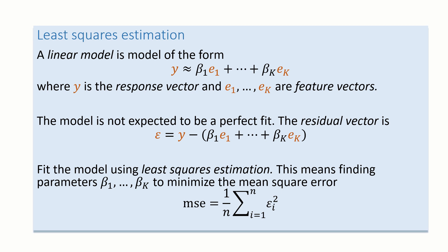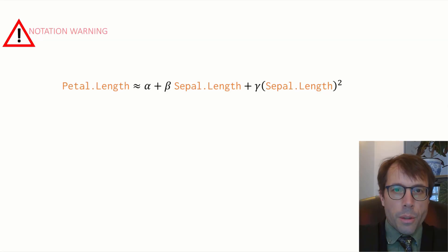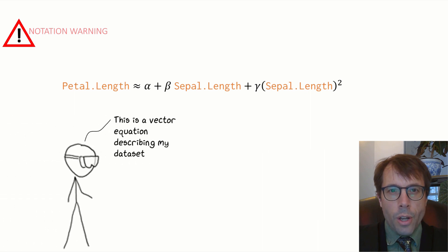But before we finish, I just want to warn you about how people use this notation. Here's our linear model again. And as I've stressed repeatedly, it's an equation about vectors. All the vectors in this equation, the terms in orange, are column vectors referring to columns in our data set. I'll call this the data way of reading the equation. But there is another way to read this equation, what you might call the science way to read it.